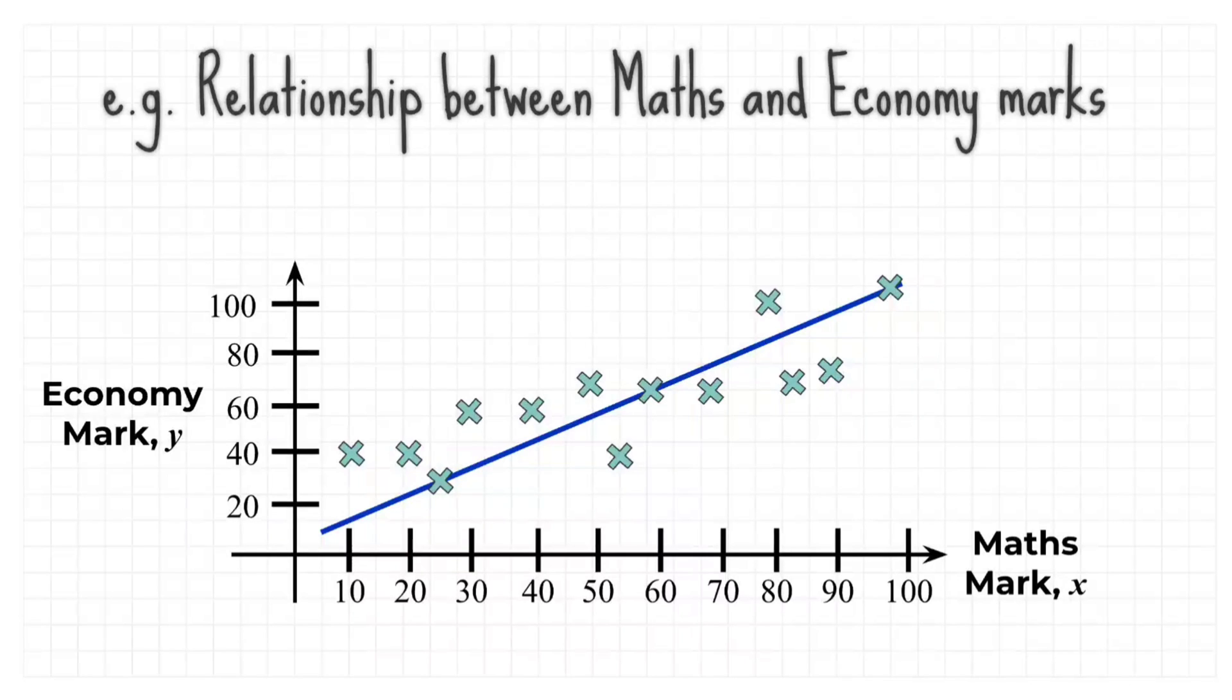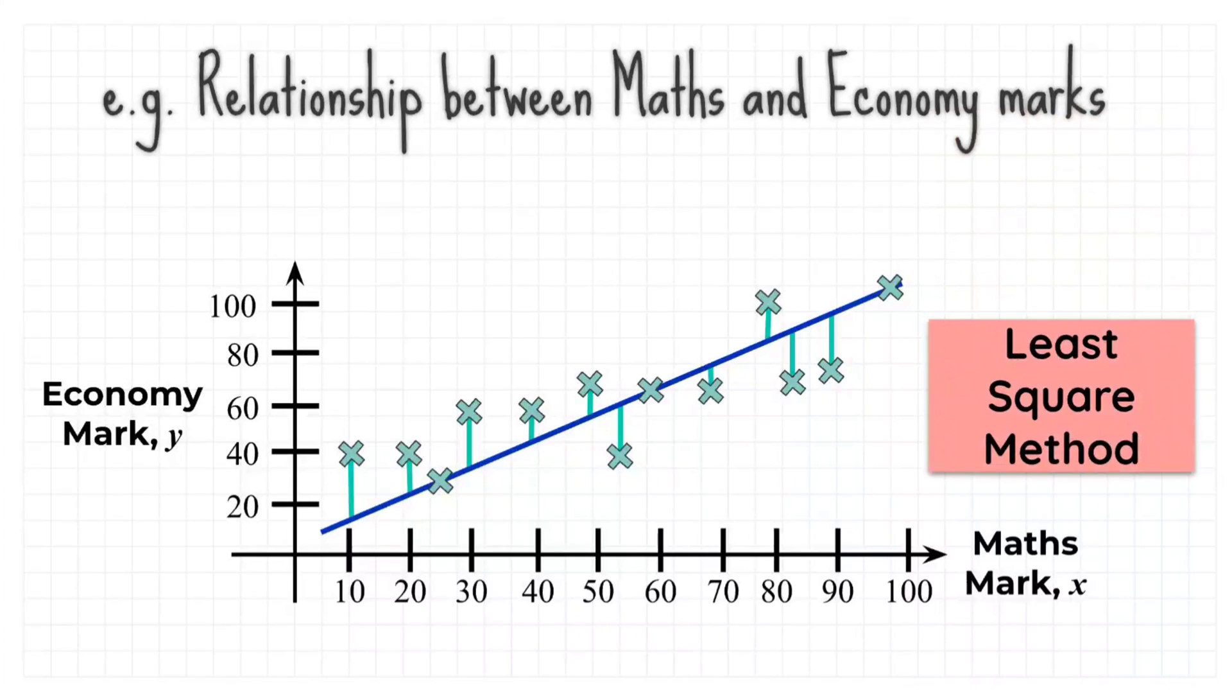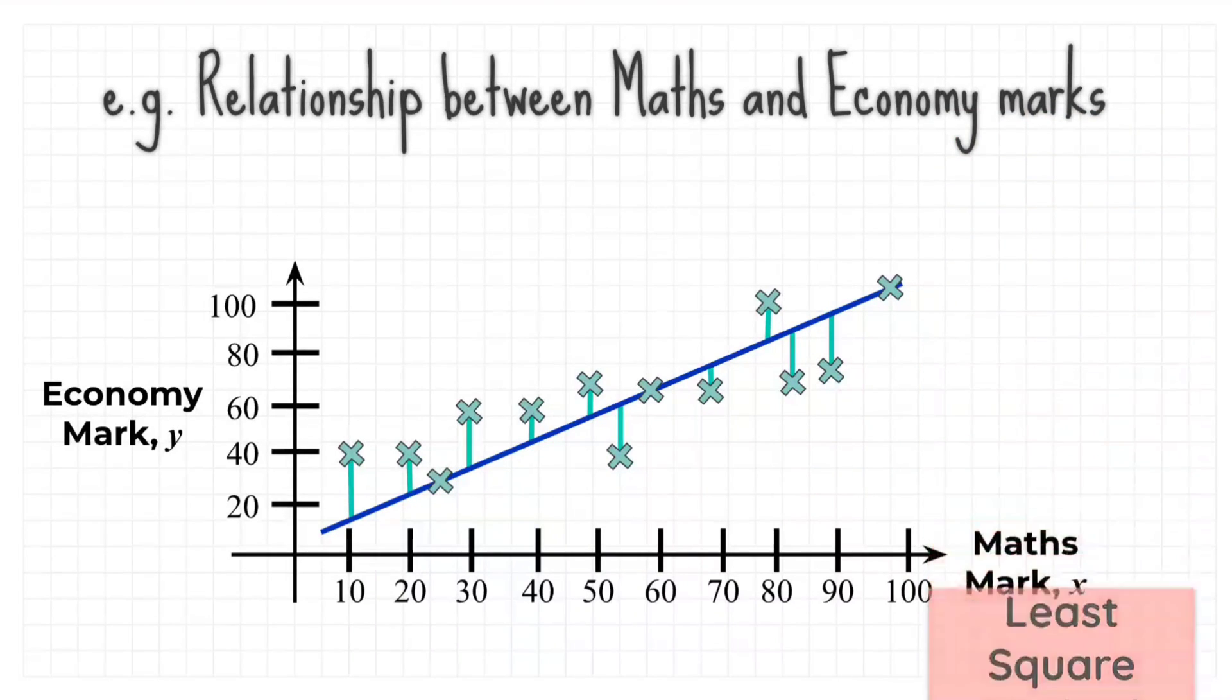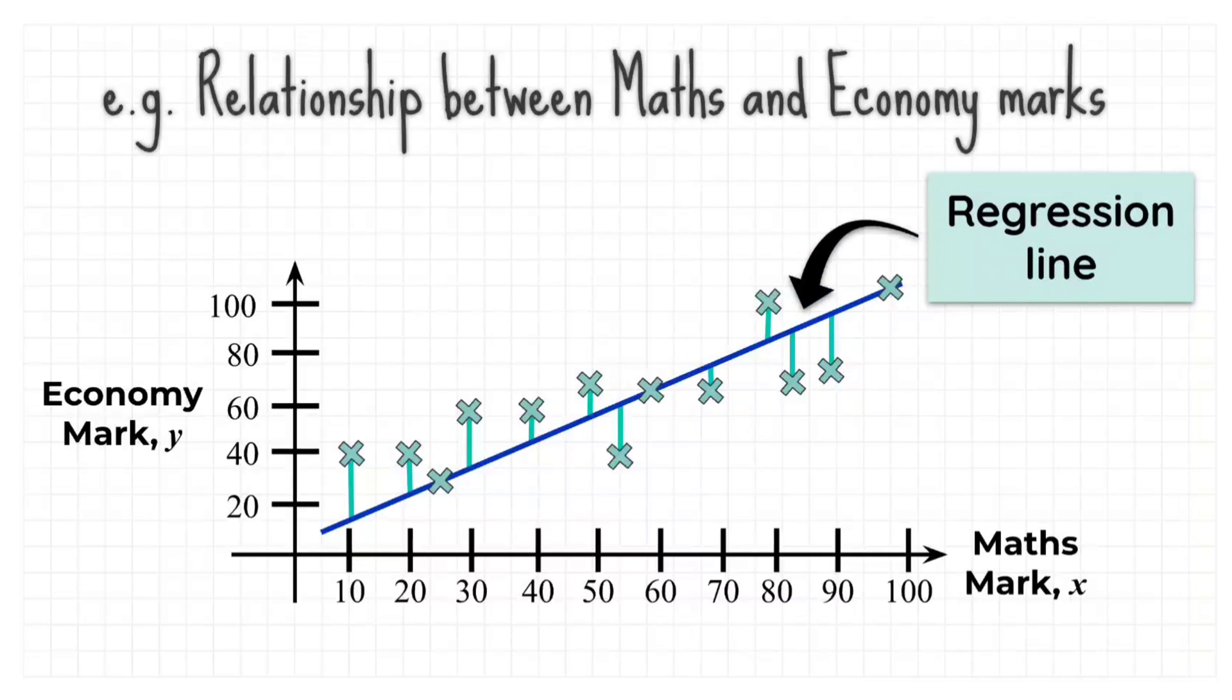This could be done by using the least square method. It calculates the best fitted line for the observed data by minimizing the sum of the square of the vertical deviations from each data point to the line. Because the deviations are first squared when added, there is no cancelling out between positive and negative values. The best fitted line is known as a regression line.